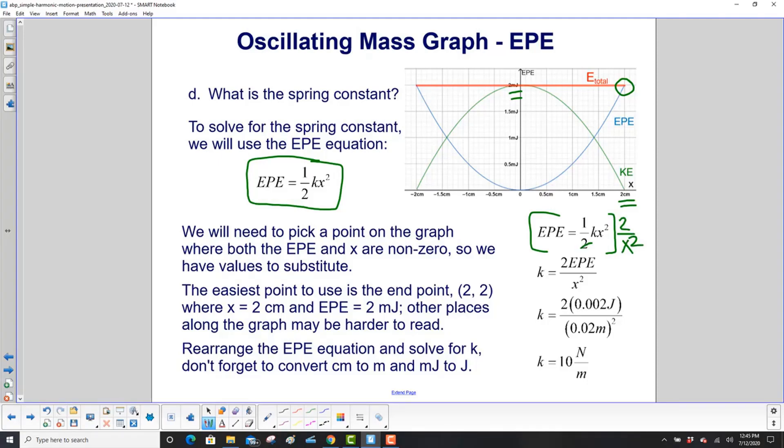You multiply both sides by two over x squared. That clears everybody on the right side, except for k, and then it puts a two over x squared next to the EPE. Plug in the numbers, and be sure to convert centimeters to meters, and millijoules to joules. To go from millijoules to joules, move the decimal place three to the left, and centimeters to meters move the decimal place two to the left. You have to use joules and meters for the equation, so we can get newtons per meter in the answer. So k will be 10 newtons per meter.